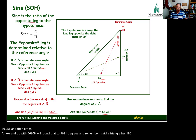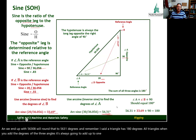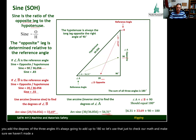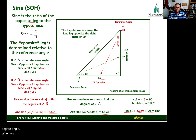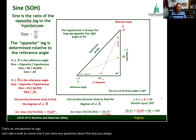If A is our reference angle, then the adjacent side has value 20, so cosine is 20 divided by 36.056, giving a cosine value of 0.55. If B is our reference angle, the adjacent is 30, so it's 30 divided by 36.056, giving cosine of 0.83. We can also use arc cosine to find degrees — same keystrokes as before but using the cosine key: second, cosine, then the values.